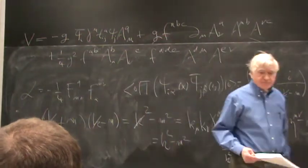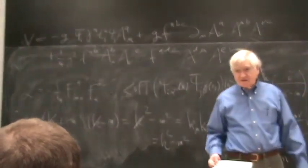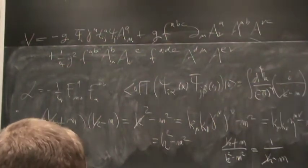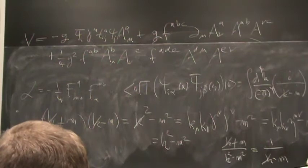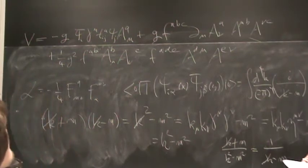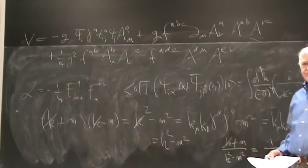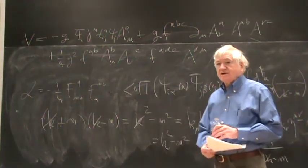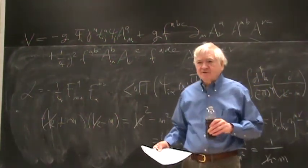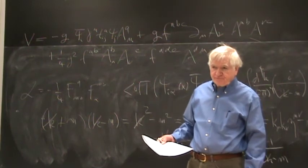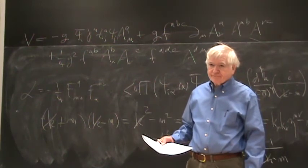So the gauge group for QCD is SU(3), right? Yes. For the electroweak theory, what is it? It's SU(2) cross U(1). Okay. And in fact, it's SU(2) left cross U(1).